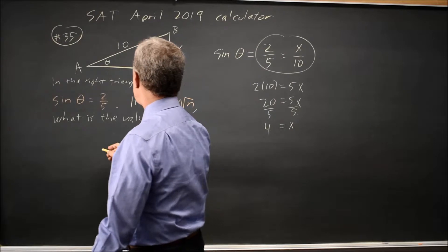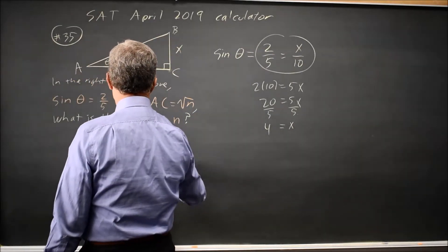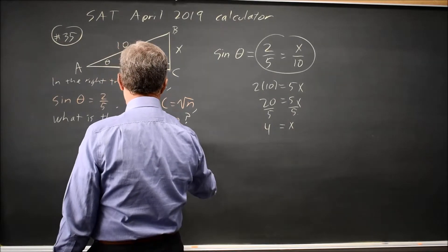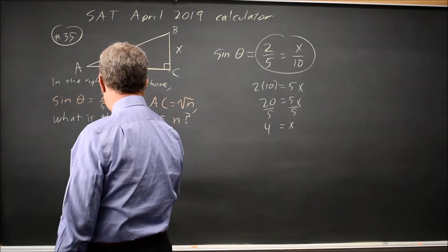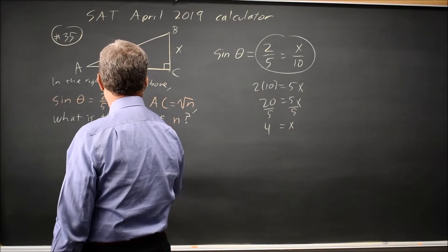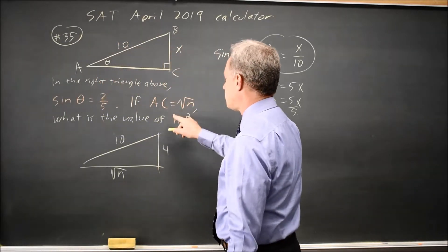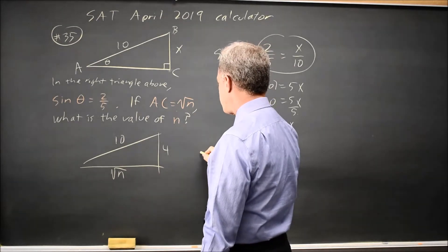And then our good friend Pythagoras tells us in a triangle if you have sides of 10 and 4, the third side, which is root n according to their question, follows the Pythagorean theorem.